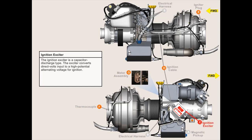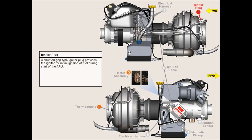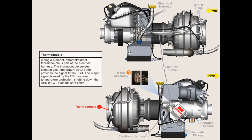The ignition exciter is a capacitor discharge type that converts direct voltage input to a high potential alternating voltage for ignition. The ignition cable connects the ignition system to the igniter plug. A shunted gap type igniter plug provides the ignition for initial ignition of fuel during the start of the APU. A single element chromel-alumel thermocouple is part of the electrical harness; the thermocouple senses exhaust gas temperature, EGT, and provides the signal to the ESU.